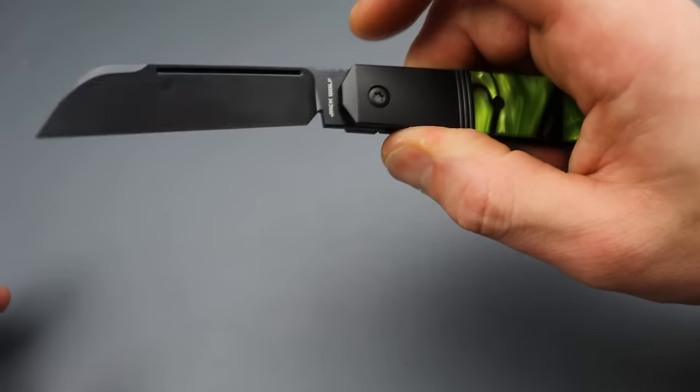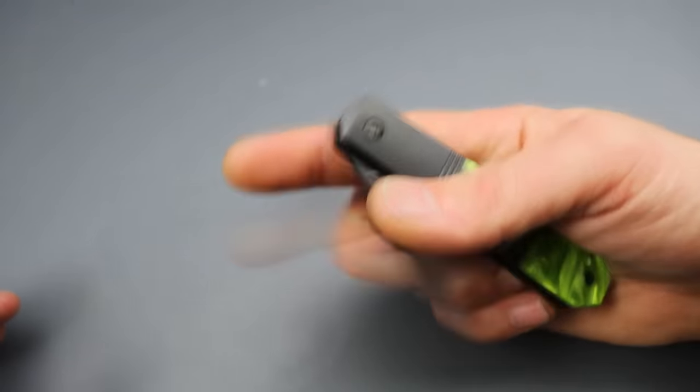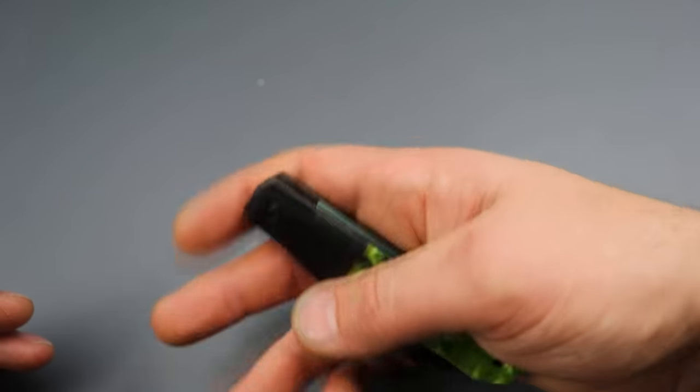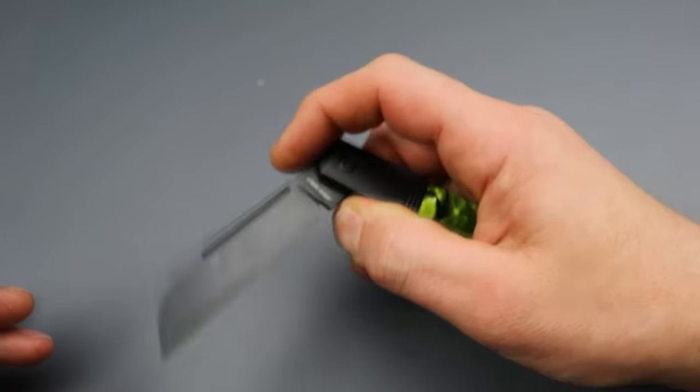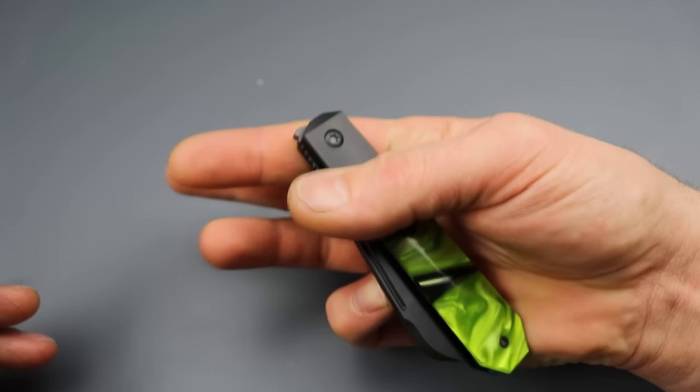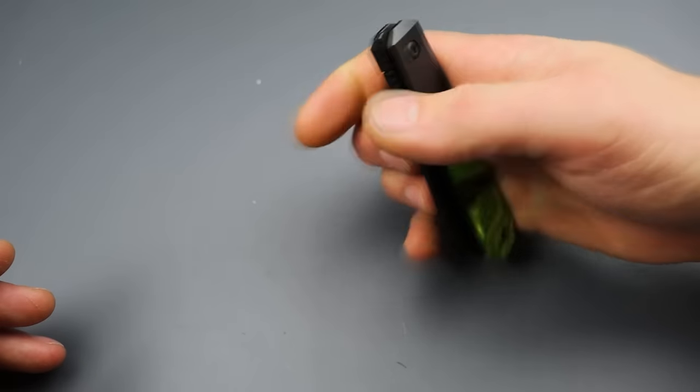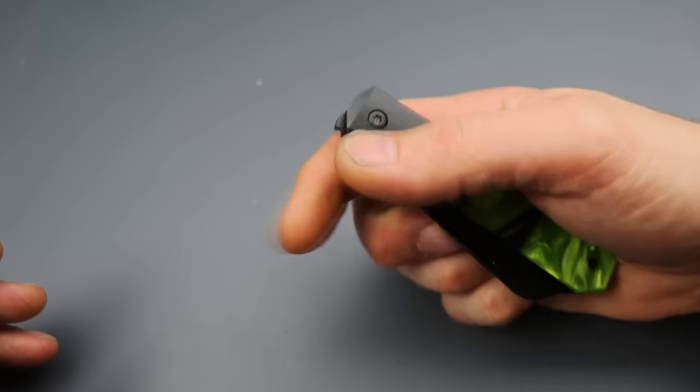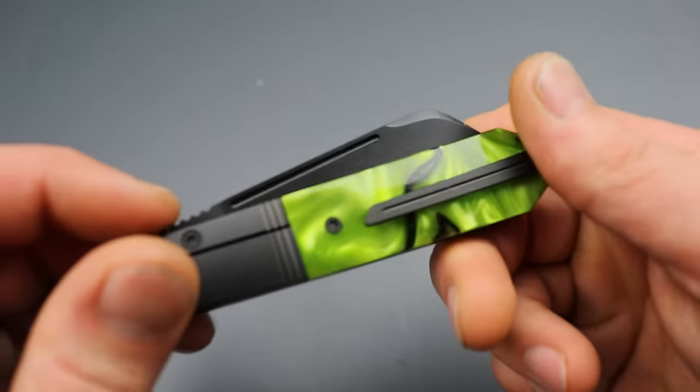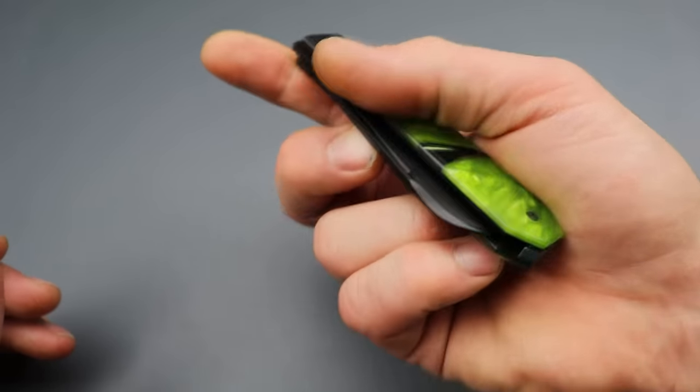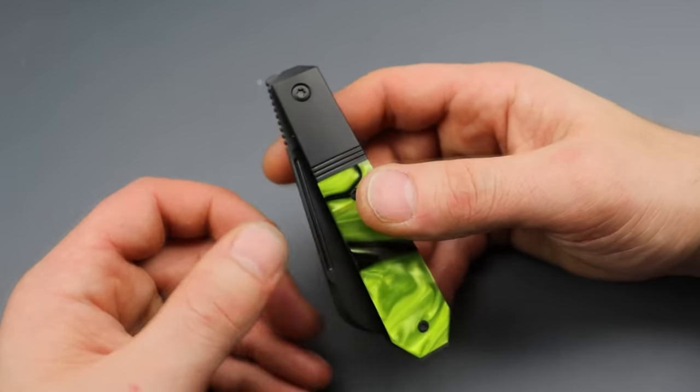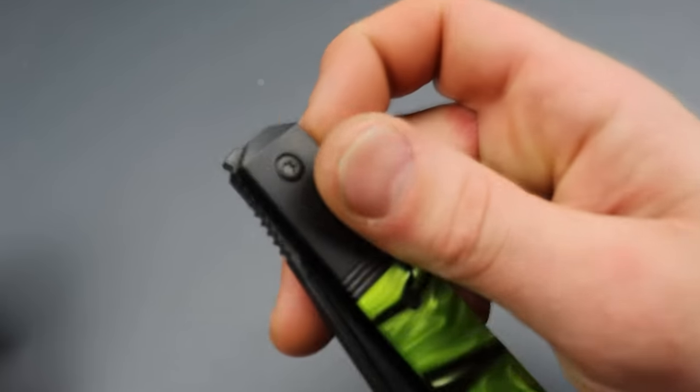The front flipper and fuller work so good. This is such an... I can reverse flick this with my pinky. That's how easy it is to reverse flick. So easy. This is a fidget knife. Very easy to use that fuller with the reverse flick. You can do it with the nail or your finger. It doesn't matter. The detent is a little bit on the lighter side.